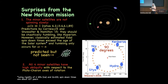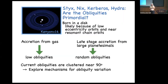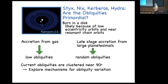Two papers were written predicting that the minor satellites would be chaotic without checking the spin-down time, which is kind of weird. With the obliquities — are they primordial or not? If they were just born at these odd angles, then we have nothing to explain. Should things be born at low obliquity or not? If they're accreting from gas, you might predict low obliquities. But if there's late-stage accretion from large planetesimals, you might predict random obliquities. Independent of that, we just said let's explore mechanisms to change their obliquities.